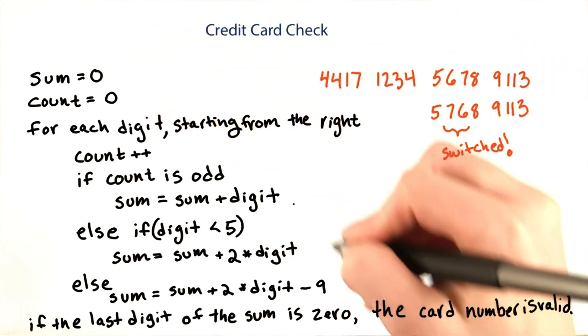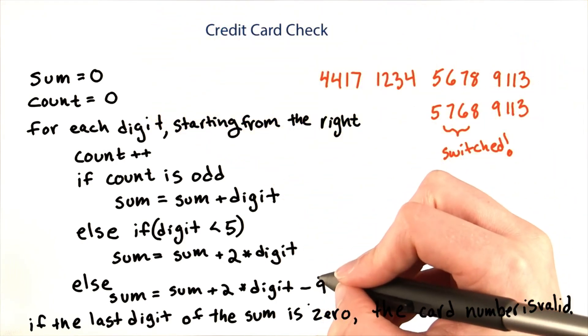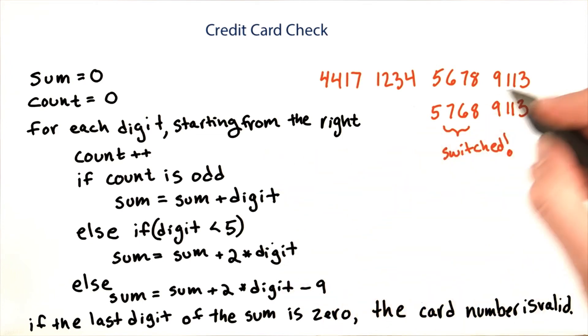How would you write Java code for this algorithm? We'll give you the code for summing digits, so you can adapt it. And also, you have this credit card number that you can use to test.